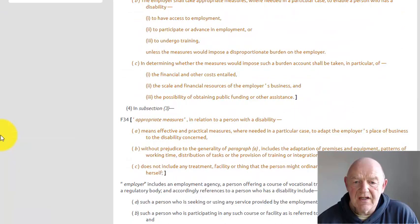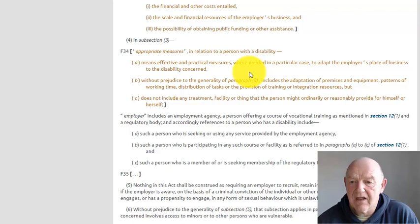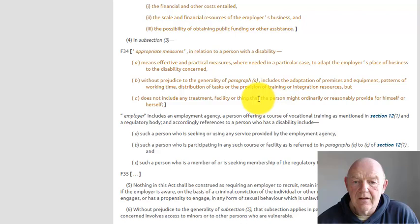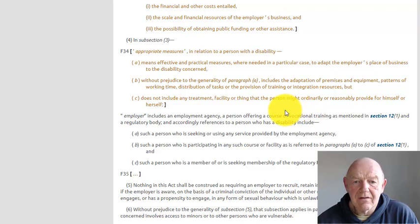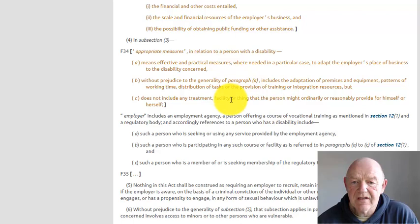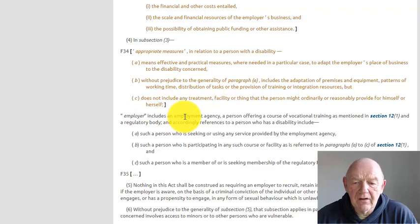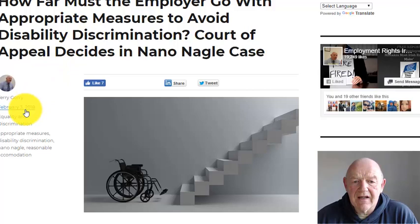The question of what is reasonable accommodation and what are appropriate measures is key. 'Appropriate measures' in relation to a person with a disability means effective and practical measures where needed in a particular case to adapt the employer's place of business to the disability concerned. This includes the adaptation of premises and equipment, patterns of working time, distribution of tasks, or the provision of training or integration resources. It does not include any treatment or thing that the person might ordinarily or reasonably provide for themselves. This is quite a wide obligation on the employer.